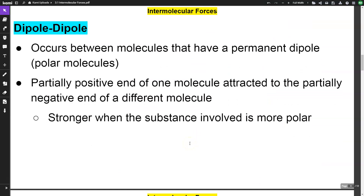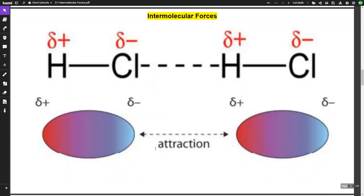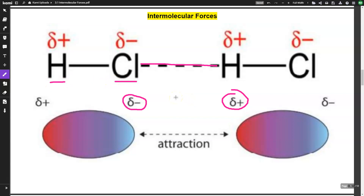Next is dipole-dipole. This occurs between molecules that have a permanent dipole, so this would only be on polar molecules. You have a partially positive end of one molecule attracted to the partially negative end of a different molecule. This is stronger when the substance is more polar — a larger polarity creates a stronger interaction between dipoles. The difference in electronegativity values creates this permanent dipole, hence the dipole-dipole interaction.